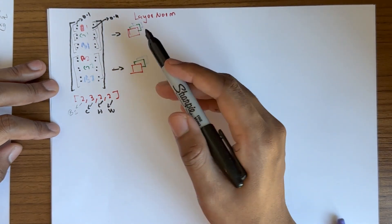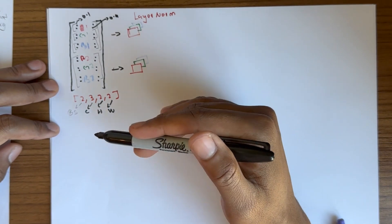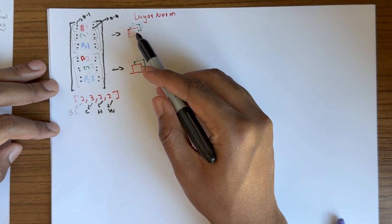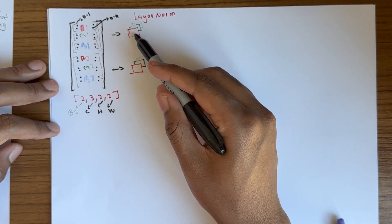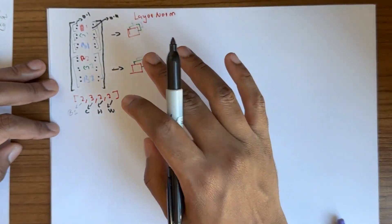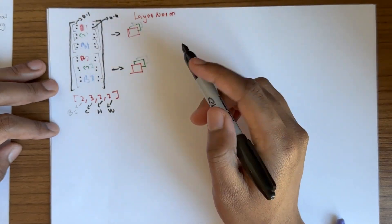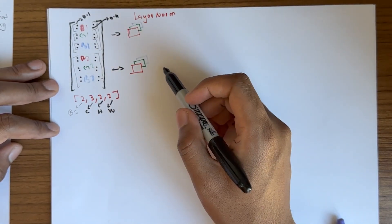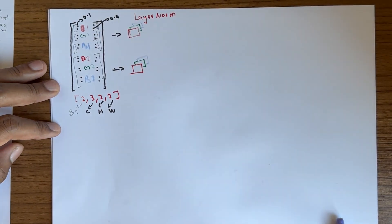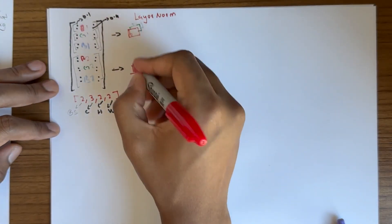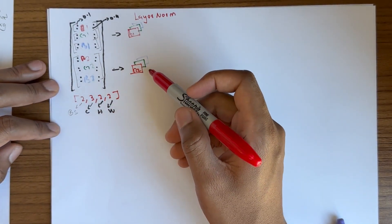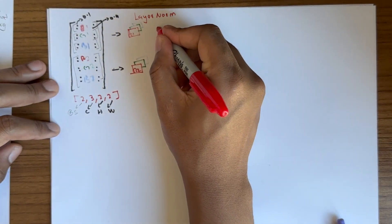Layer norm normalizes the data across the features, not across the batches. Unlike batch norm where we took R1 and R2 to compute the mean, here we're just going to take R1 to compute the mean and variance. R2 will have its own mean and variance for normalization. Let's normalize R1.